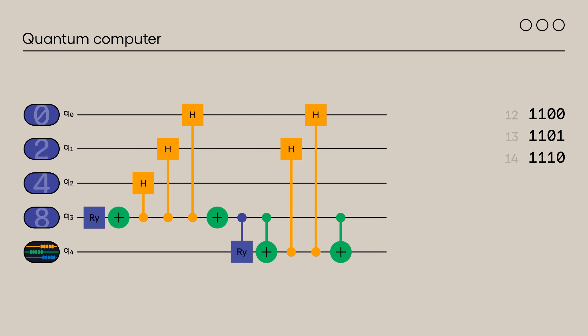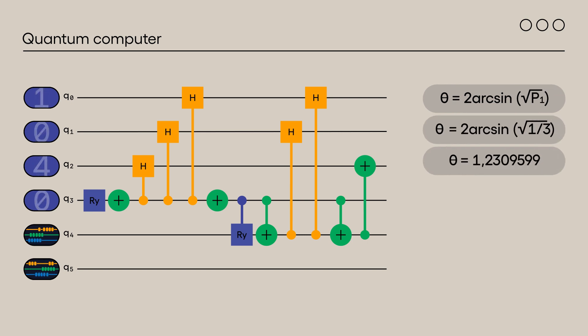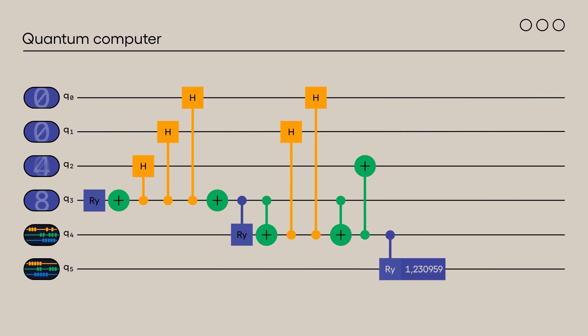First, we apply a CNOT gate from q4 to q2 to work on the states for which q3 and q2 are in the one state. Then we divide the three states into two columns, numbers 12 and 13 with a bit in position 1 at 0 and number 14 with this same bit at 1. We'll need another ancilla qubit, q5. We must place qubit 5 in a state that allows us to measure 1 with a 1 in 3 chance. The angle theta which corresponds to p1 equals 1 over 3 is... We apply a control RY gate to qubit 5 with q4 as the control qubit. We obtain the states corresponding to numbers 12 and 13 by applying a control Hadamard gate from q5 to q0 framed by two CNOT gates from q4 to q5. The last state corresponding to number 14 is obtained by positioning a CNOT gate from q5 to q1.